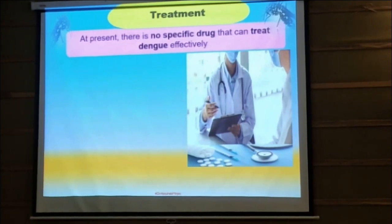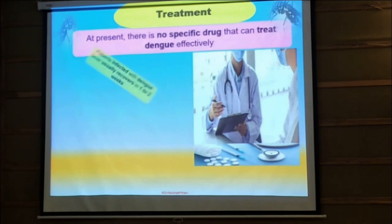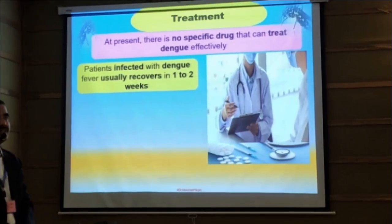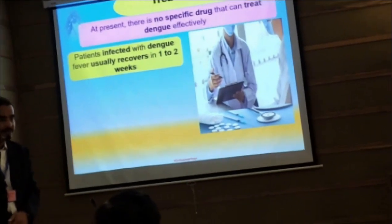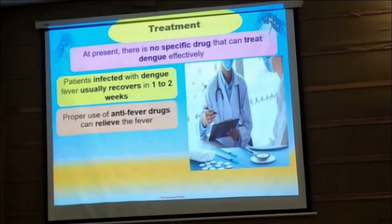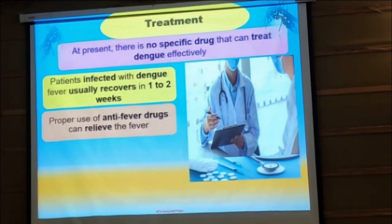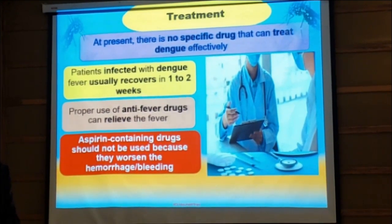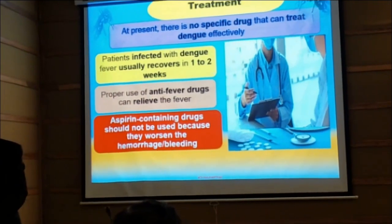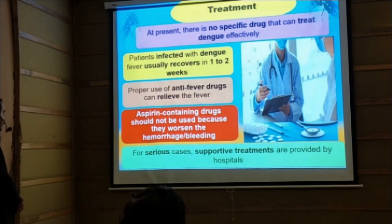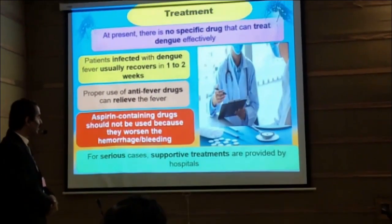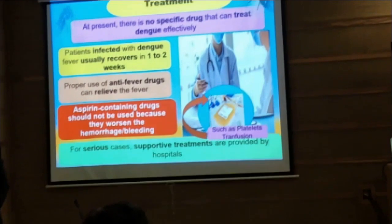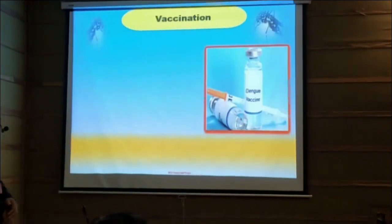To treat this disease, there is no specific treatment. However, a patient infected with dengue usually recovers in 1 to 2 weeks if they have a strong immune system and no other complications. The proper use of anti-fever drugs can relieve the fever. However, aspirin-containing drugs should not be used because they can worsen the condition and may cause bleeding. In serious cases, some hospitals also use supportive treatment, for example, platelet transfusion. If there is a reduced level of platelets, then immediately there should be a platelet transfusion for the patient.